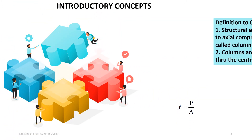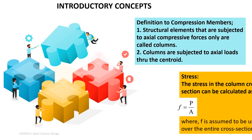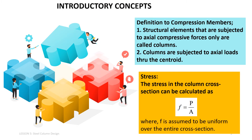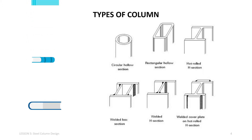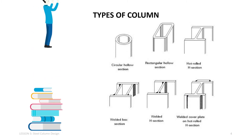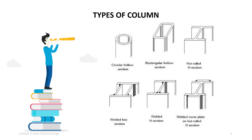Structural elements that are subjected to axial compressive forces only are called columns. Columns are subjected to axial loads through the centroid. The stress in the column cross-section can be calculated as an external force P acting over the cross-sectional area, where F is assumed to be uniform over the entire cross-section. The two common types of column sections are steel hollow sections — circular, square or rectangular — and I-column.